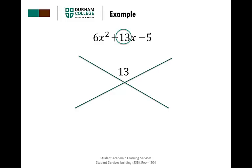The next step will be to take the product of our first and last terms, so 6 times negative 5, and we're going to place that in the bottom section of the x, so 6 times negative 5 gives us negative 30.